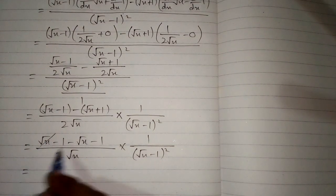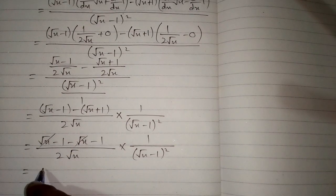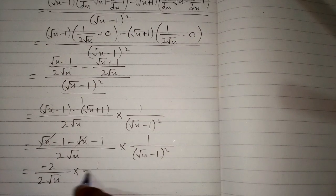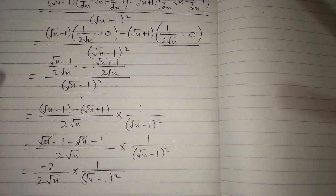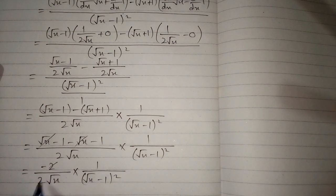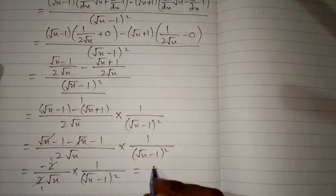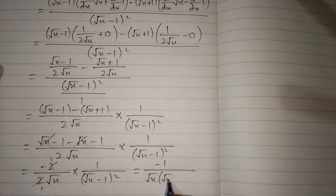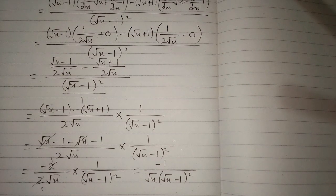Now square root of x minus square root of x is 0, so we have minus 2 upon 2 square root of x, multiplied by 1 upon square root of x minus 1 whole square. Now this 2 and this 2 can be cancelled, so the final answer is minus 1 upon square root of x multiplied by square root of x minus 1 whole square. And this is the required answer.